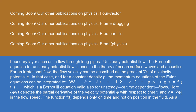The Bernoulli equation for unsteady potential flow is used in the theory of ocean surface waves and acoustics. For an irrotational flow, the flow velocity can be described as the gradient ∇φ of a velocity potential φ. In that case, and for a constant density ρ, the momentum equations of the Euler equations can be integrated to: ∂φ/∂t + ½v² + p/ρ + gz = f(t), which is a Bernoulli equation valid also for unsteady or time-dependent flows.